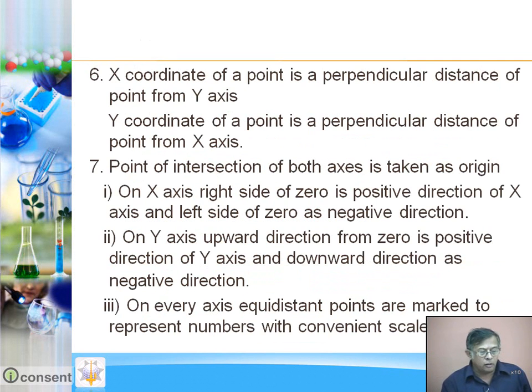The X coordinate of a point is the perpendicular distance of that point from the Y axis. The Y coordinate of a point is the perpendicular distance of the point from the X axis.